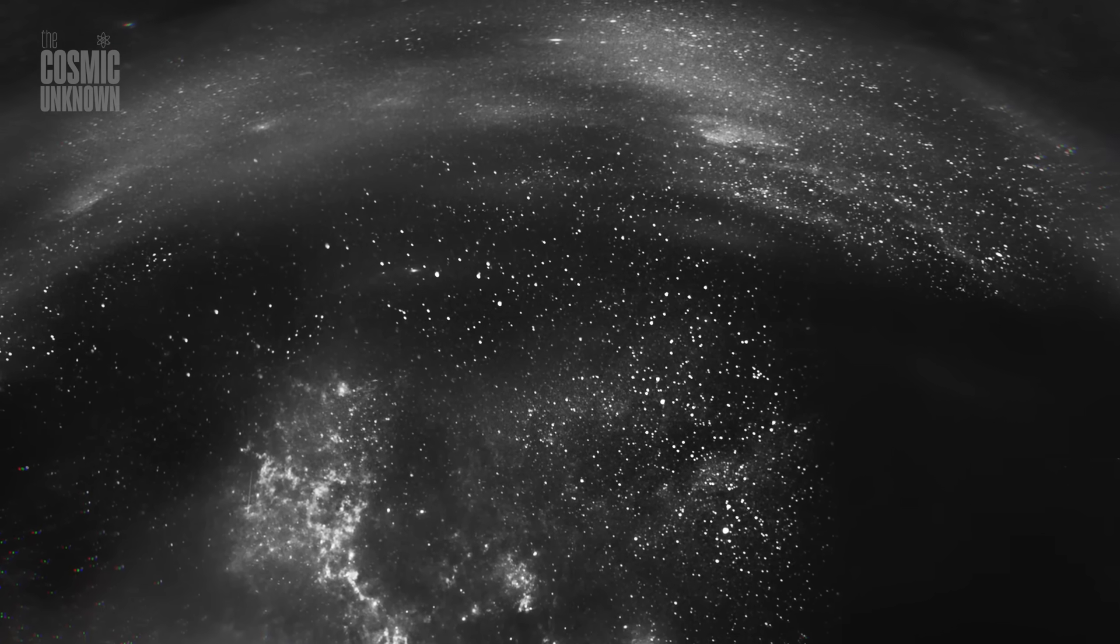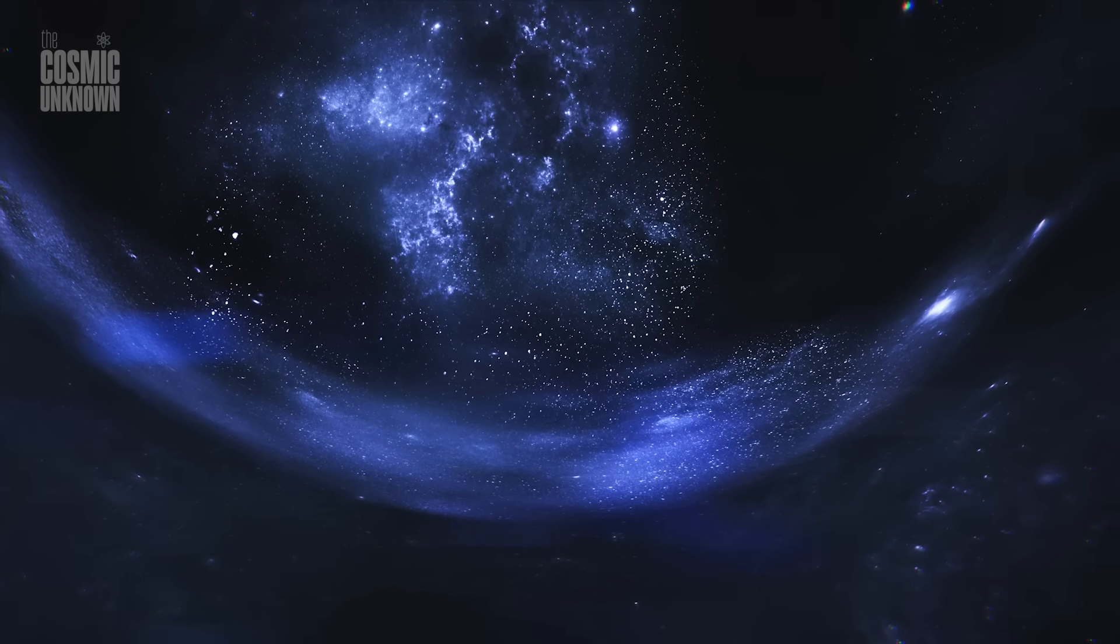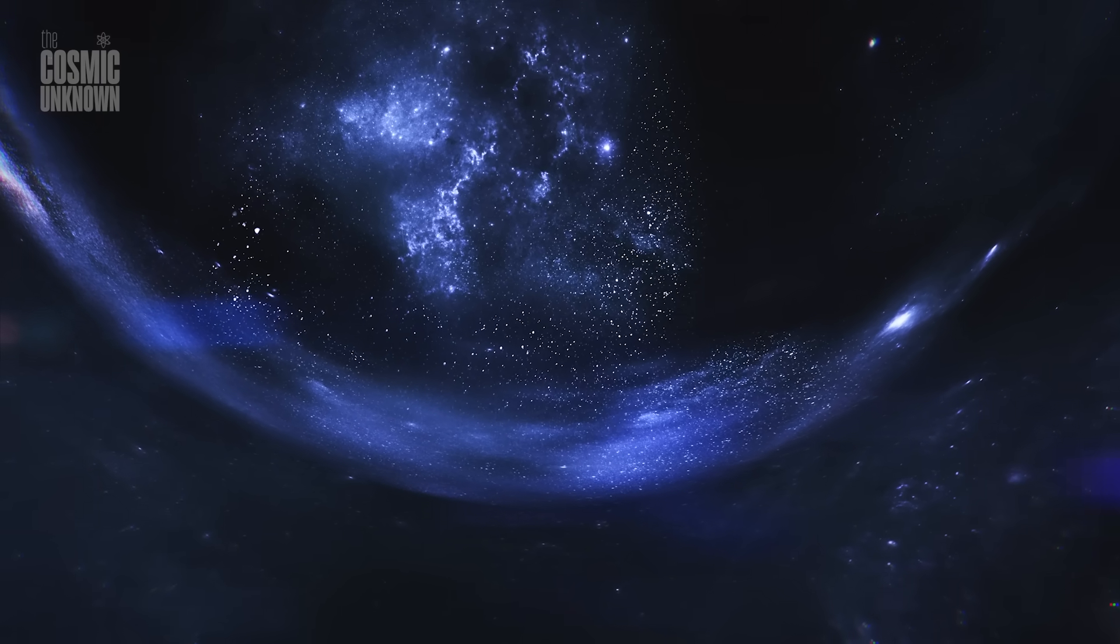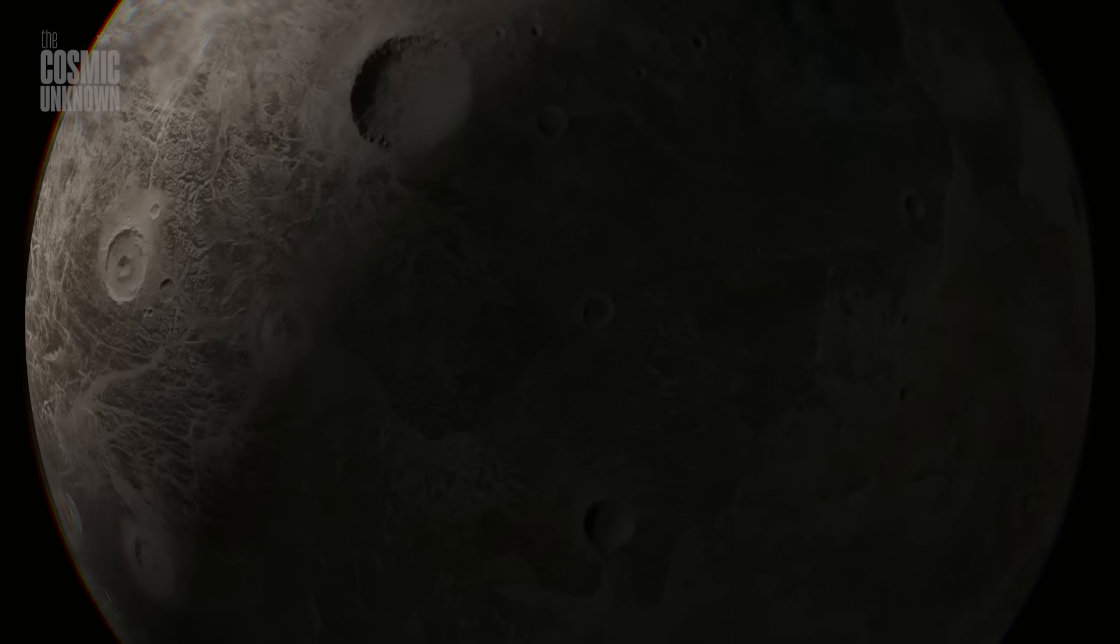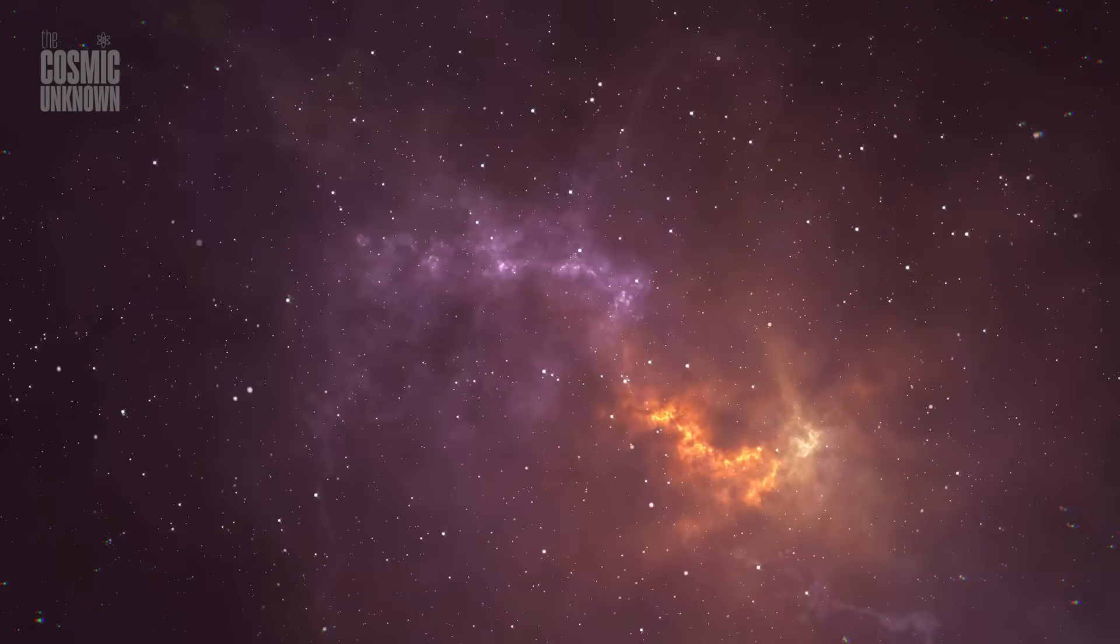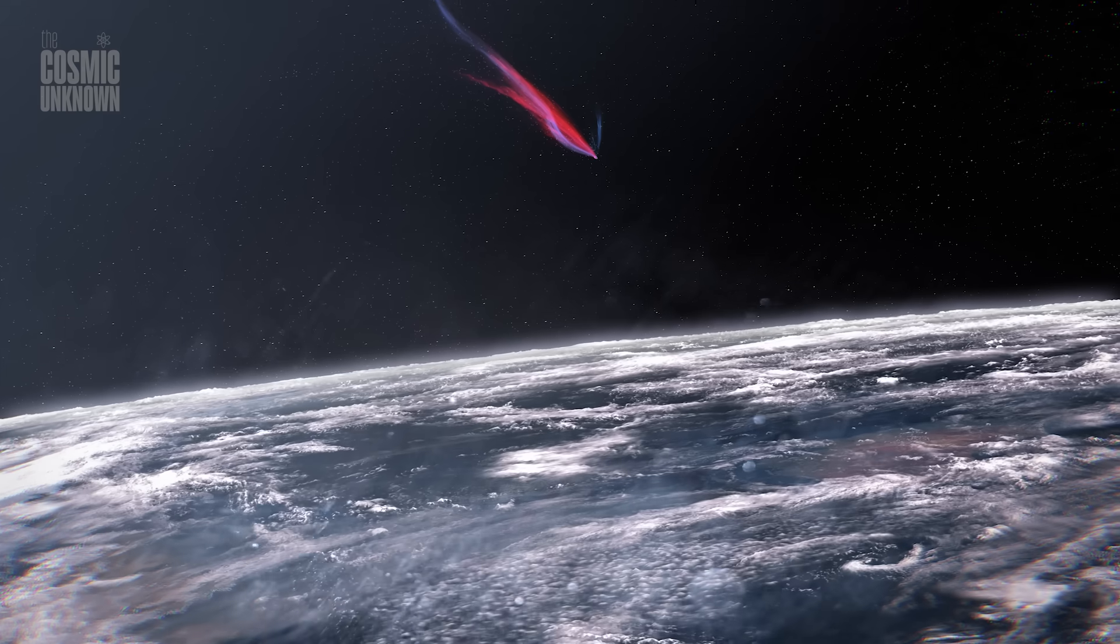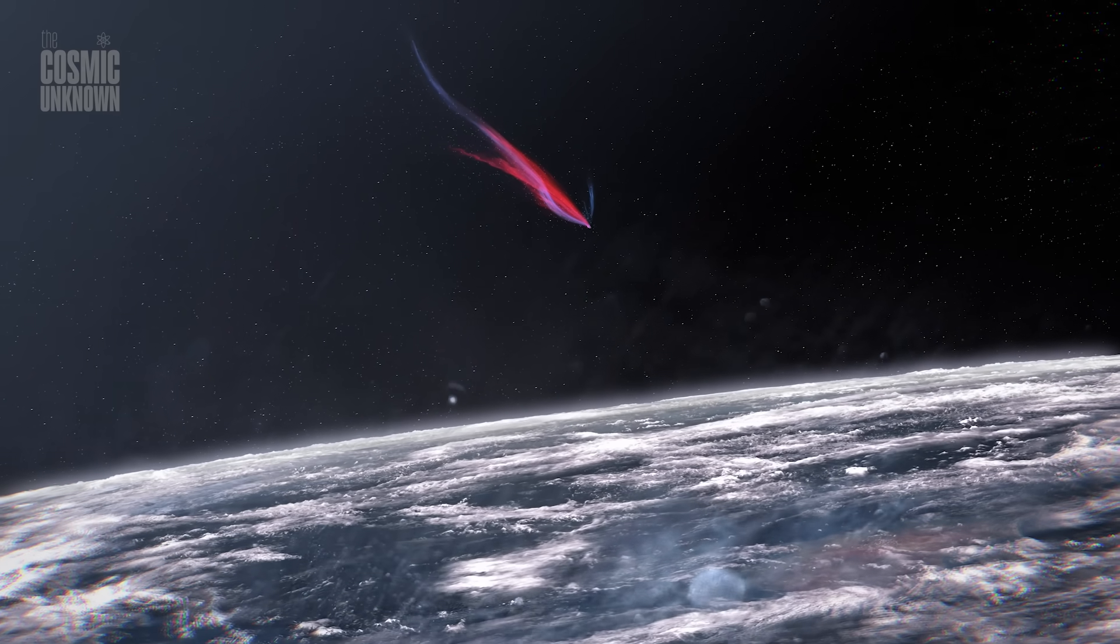Sagittarius lies near the galactic center, a region dense with stars, radiation, and observational noise. It's one of the hardest parts of the sky to monitor, which means 3I Atlas could have been approaching for years, undetected.